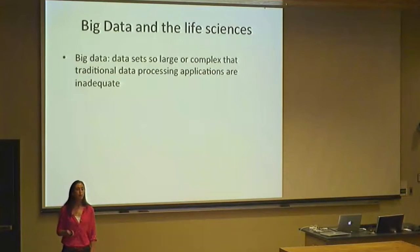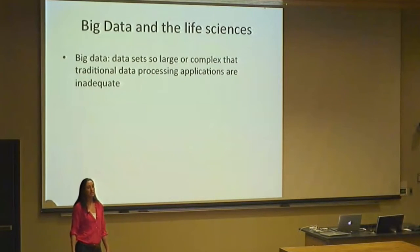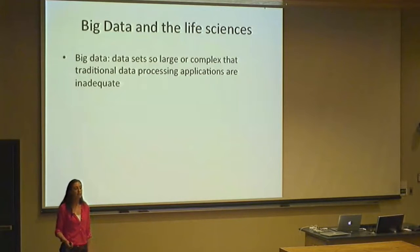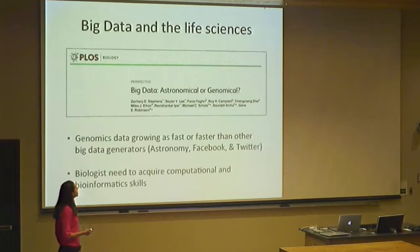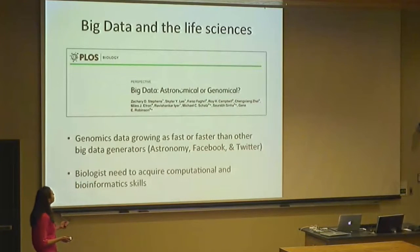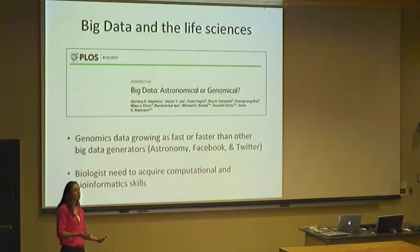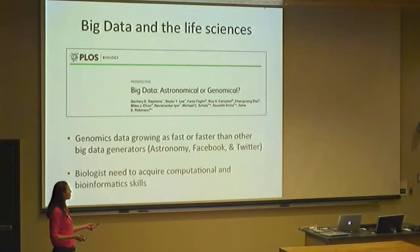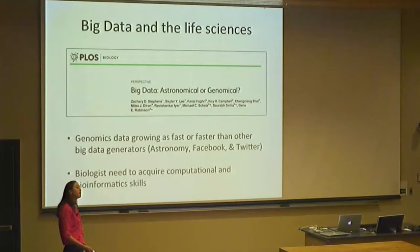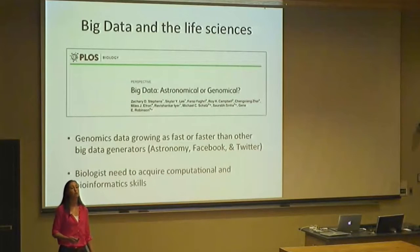Some of you may have heard of the term 'big data' — that basically describes any data set so large or complex that our normal ways of analyzing or manipulating it are inadequate. Genomics is a big data science. A paper in PLOS Biology compared genomic data production to disciplines like Facebook, Twitter, and astronomy, finding that genomic data production is growing as fast or faster than these other fields. We're producing more sequence data than there are tweets posted to Twitter globally every year. This means biologists working with these data need to acquire computational and bioinformatic skills.